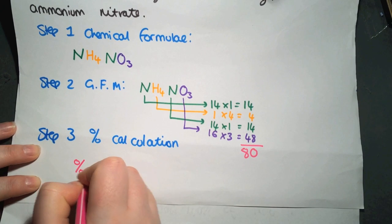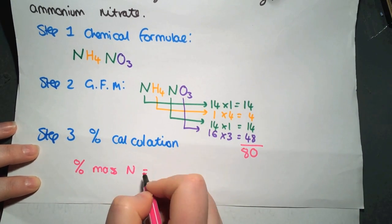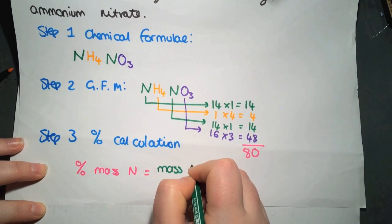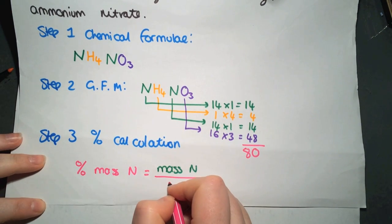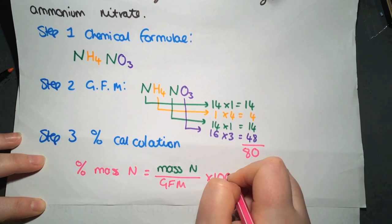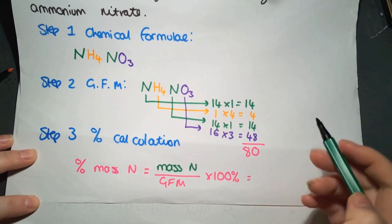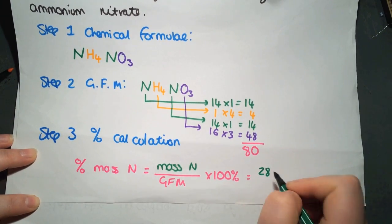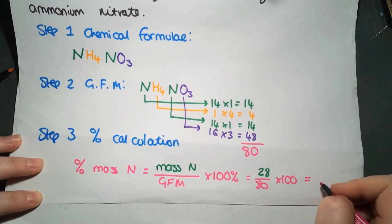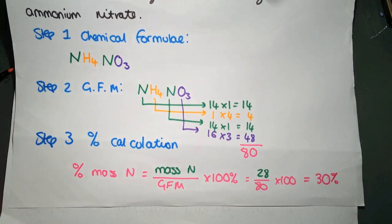So our percentage mass of nitrogen will equal the mass of nitrogen present divided by the gram formula mass, and then you'll multiply it by 100. So here we have 14 plus 14 is 28. That's divided by 80, and then finally multiplied by 100, which will give us 30% of our fertilizer being made of nitrogen.